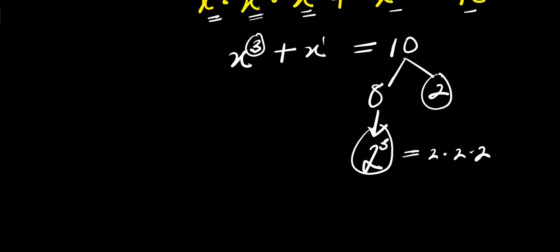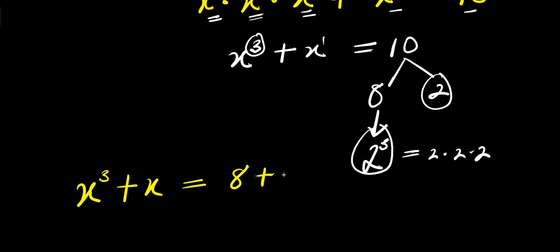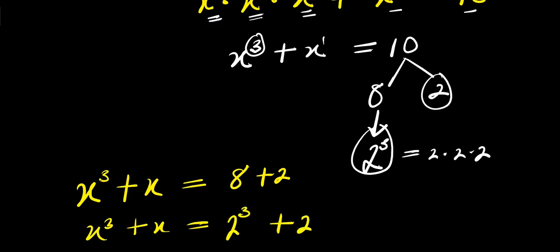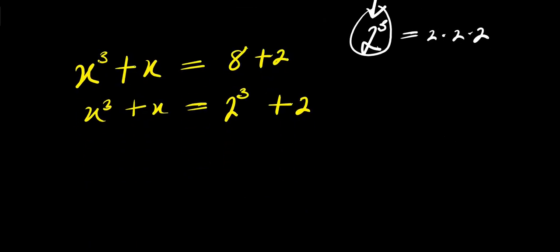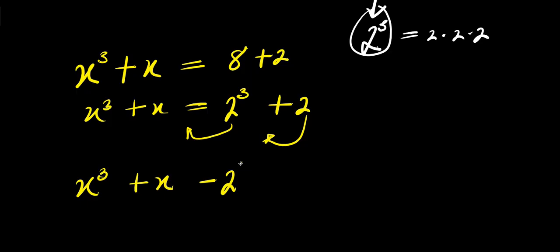That means the equation becomes x cubed plus x equals 8 plus 2, that means we have x cubed plus x equals 2 cubed plus 2. So from here, moving terms over, we have x cubed plus x minus 2 cubed minus 2 equals 0.